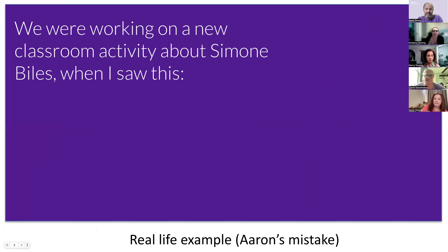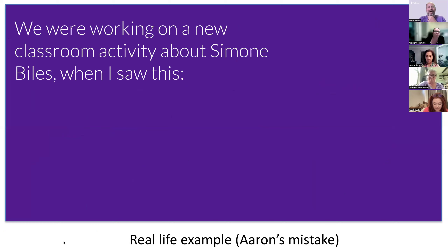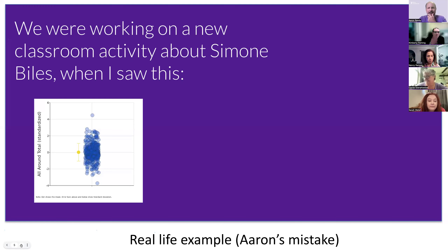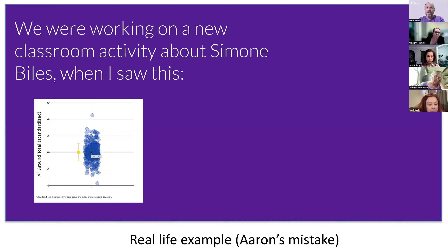I want to share a little anecdote about using knowledge of error bars in practice — a mistake I made this week that perfectly illustrates why error bars can be so useful. This was a dataset I was looking at. We're working on an activity about women's gymnastics with an eye to the question: is Simone Biles the greatest gymnast of all time? Each data point in this figure represents a different all-around performance for a women's gymnast over the last 16 years.